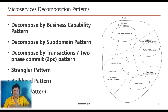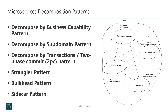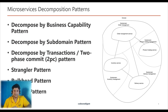Decomposition patterns tell us how to decompose a monolithic application into smaller microservices. This pattern helps us in breaking a big application into smaller modules. There are various ways to decompose a monolithic application. Decomposition patterns suggest decomposing the monolithic application into services by applying principles like decomposed by business capabilities, decomposed by subdomains, or decomposed by transactions.